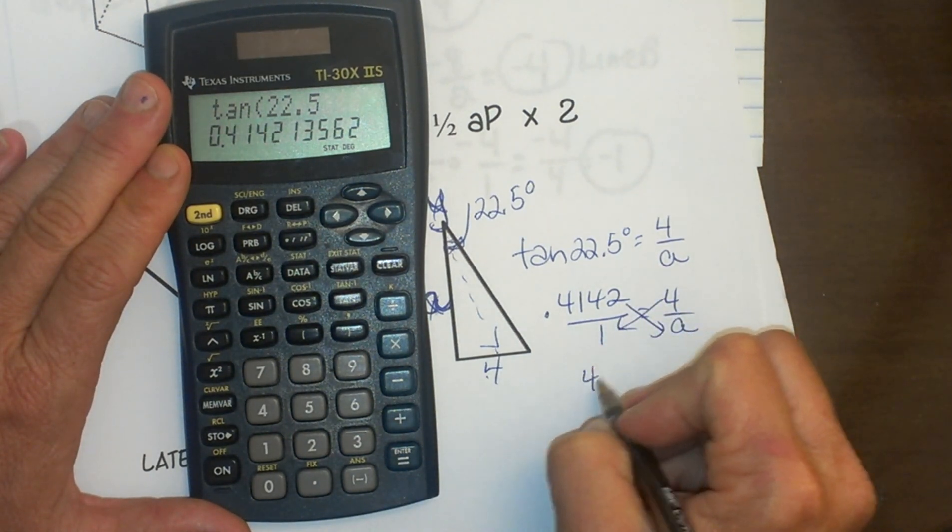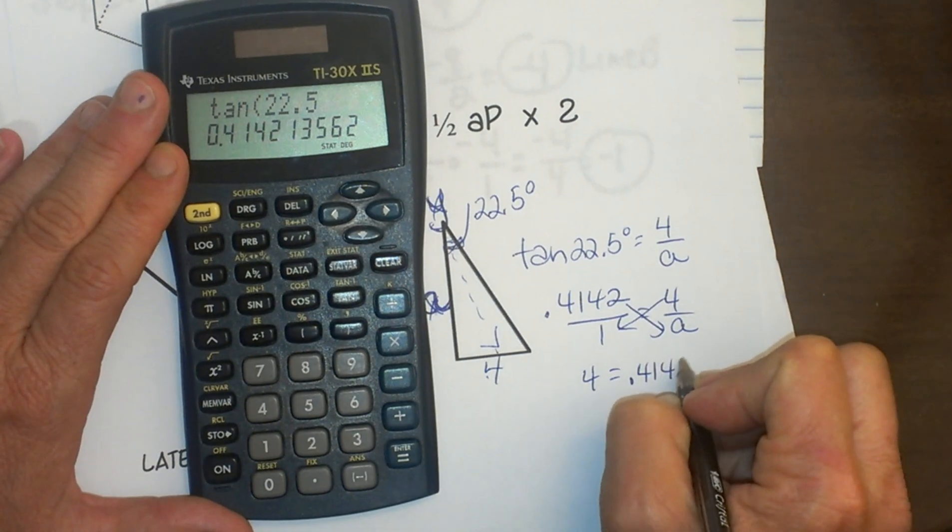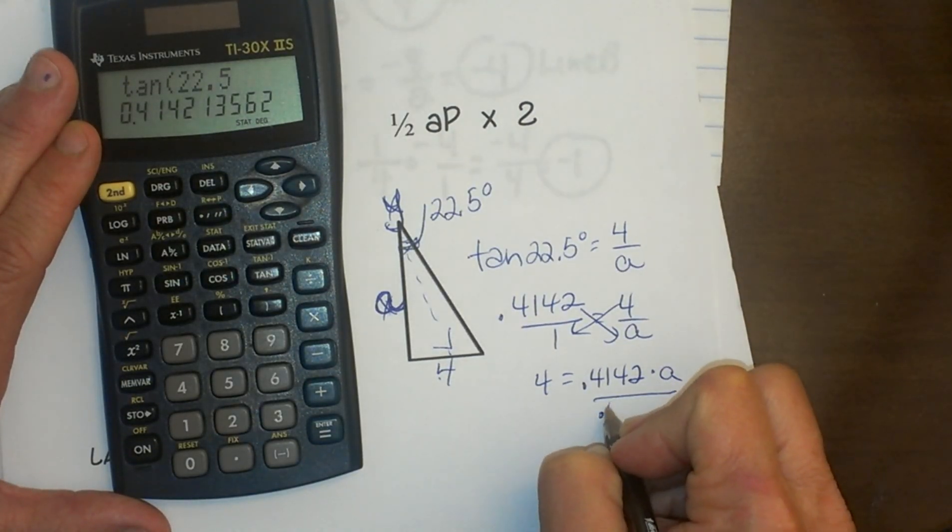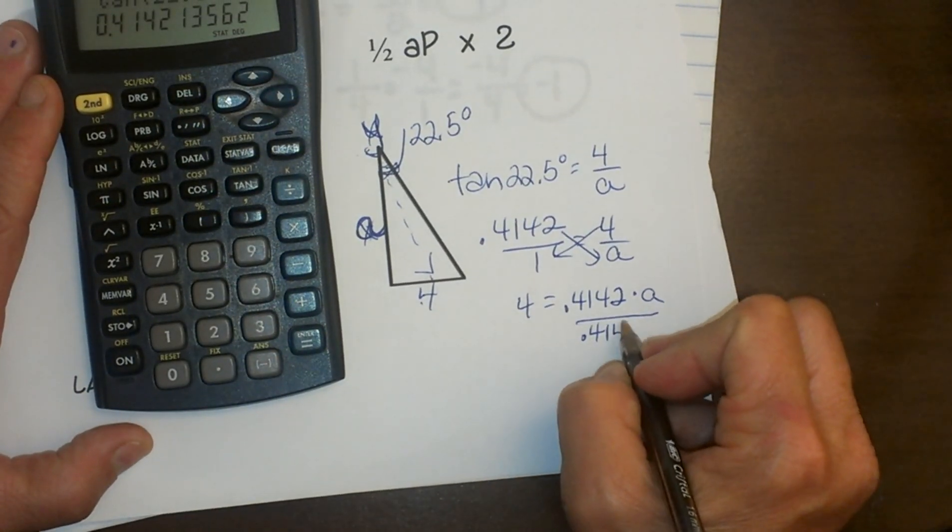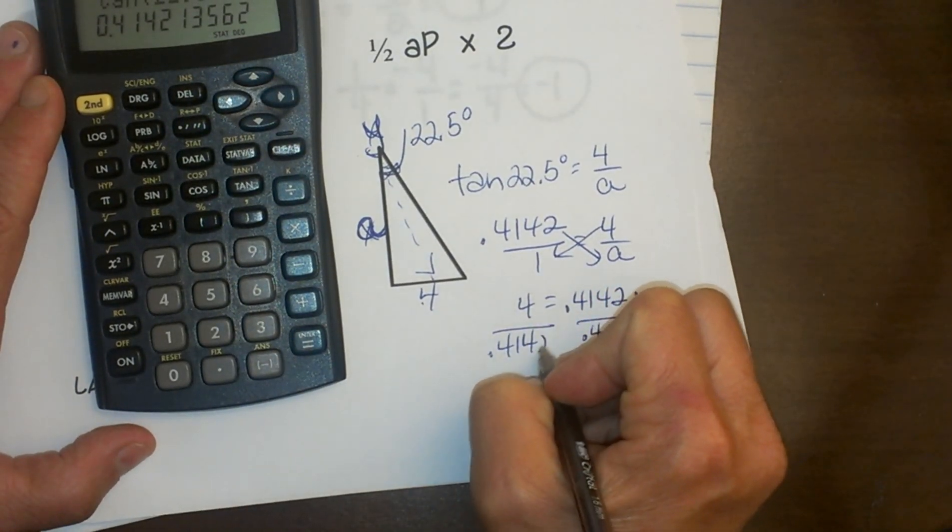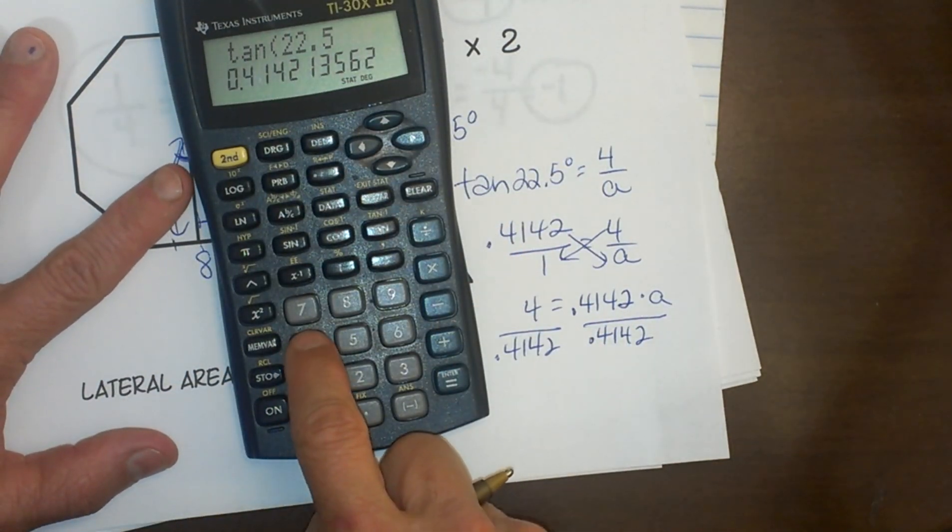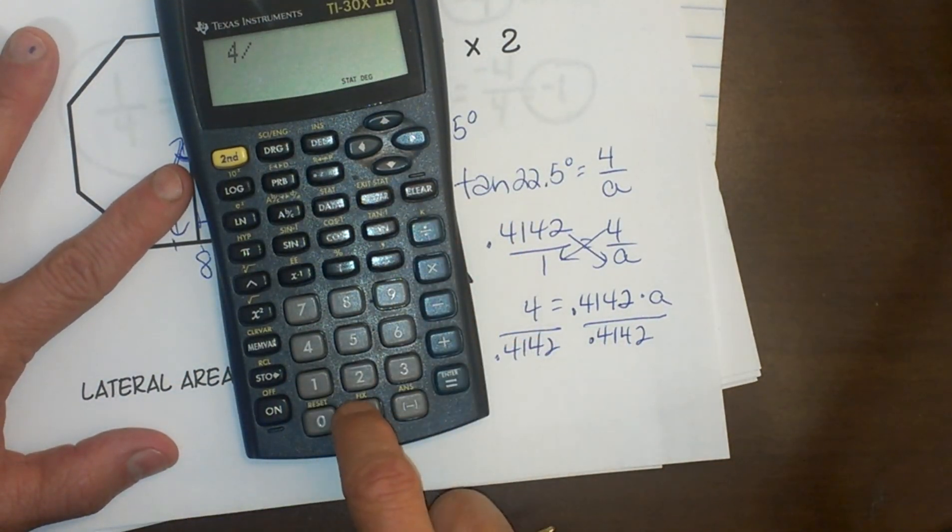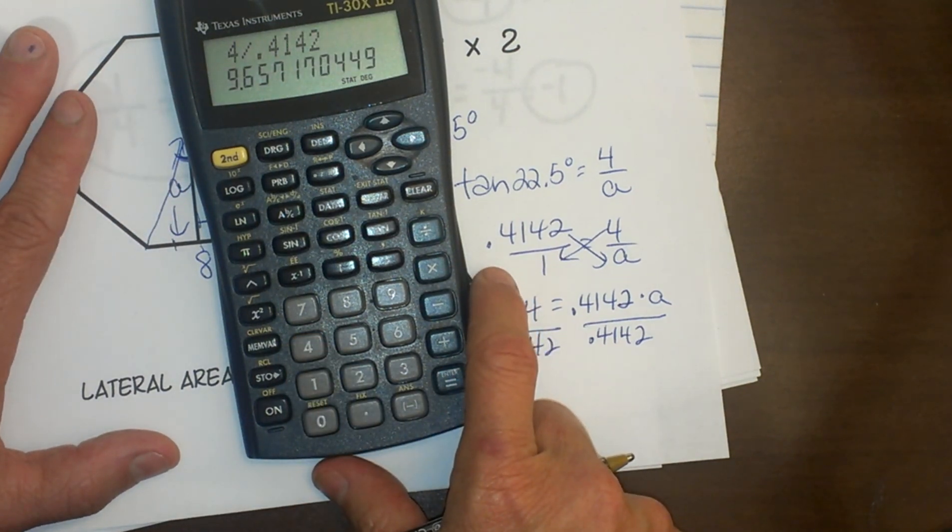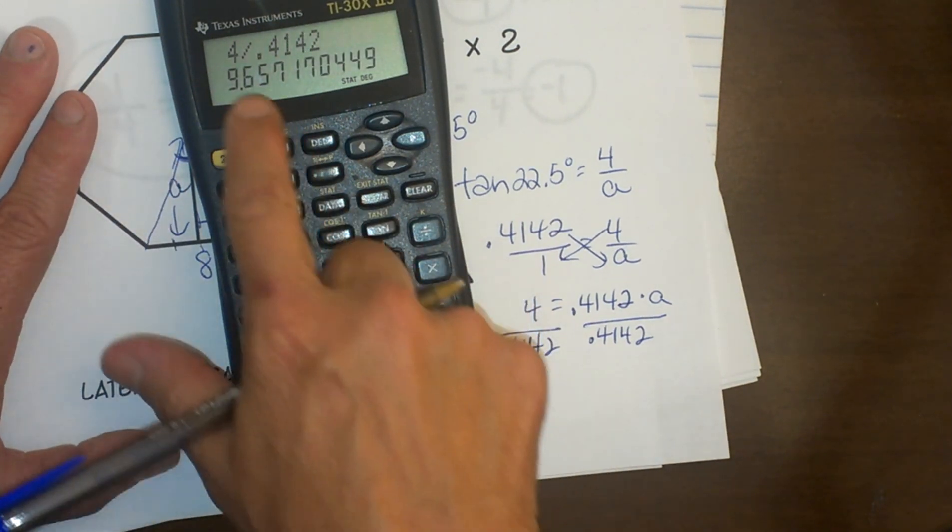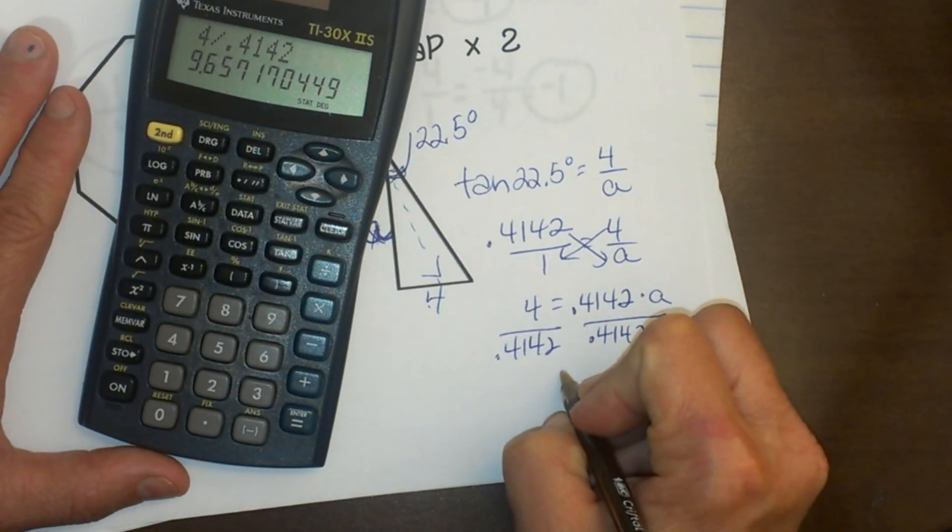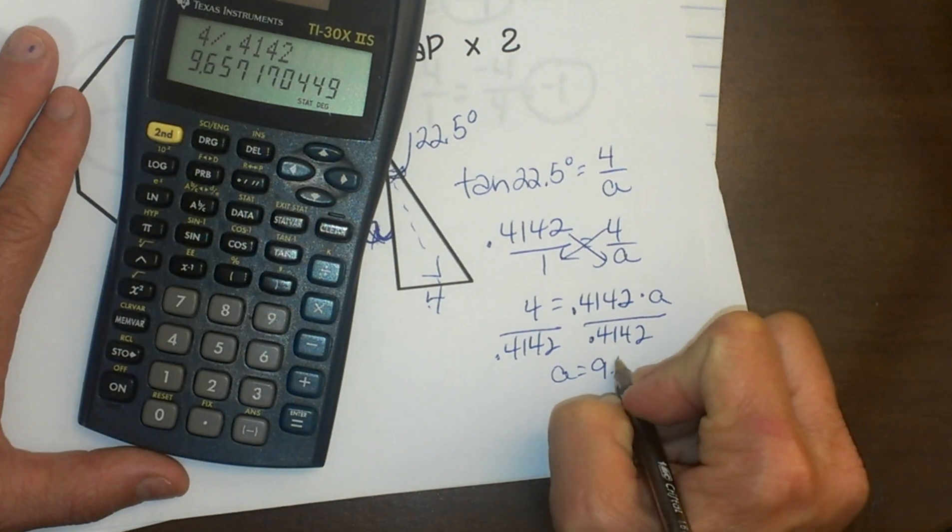So I get 4 is equal to 0.4142 times a, and then I'm going to divide by 0.4142. Use my handy dandy calculator: I'm going to take 4 divided by 0.4142 and I get 9.657. So let's say 9.7. Let's round that off to our closest tenth. The apothem is 9.7.